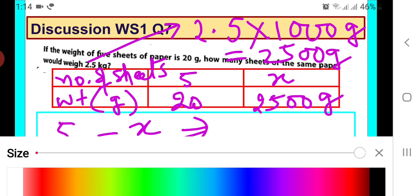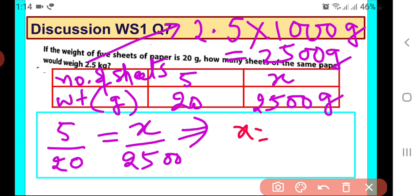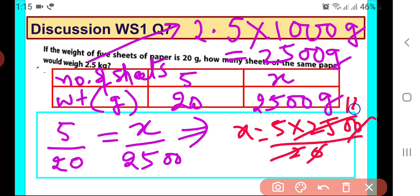So here x will be equal to 5 into 2500 divided by 20. We can simplify this. 0 and 0 gets cancelled. Here we get 125. So x comes out to be 5 into 125 that is 625.